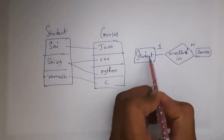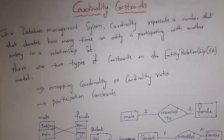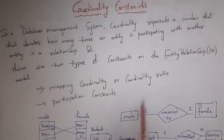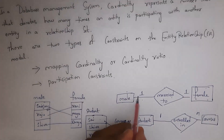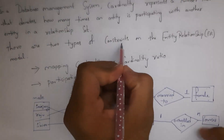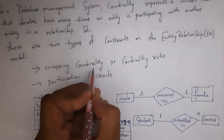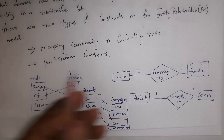One entity in the first table is participated with multiple entities in the second table. So, cardinality constraint is how many times an entity is participating with another entity in a relationship set. Constraints are nothing but rules. Total, there are two types of constraints in the ER model — the first one is mapping cardinality, also called cardinality ratio, and the second one is participation constraints.